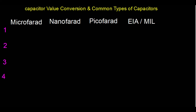We'll take four examples to learn microfarad conversions. First example: 0.001 microfarad — what is this value in nanofarad? To convert microfarad to nanofarad, you multiply by 1000. So 0.001 microfarad multiplied by 1000 gives you 1 nanofarad.